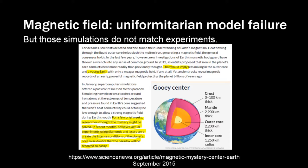In fact, scientists admit that experiments imply a young Earth. And they add to it, for a few brief weeks, researchers thought the mystery might be solved. In recent months, however, actual experiments using diamonds and lasers to recreate the intense conditions of the planet's core raise doubt that the paradox will be resolved so easily.